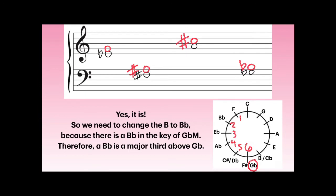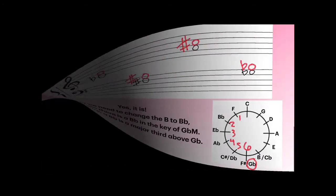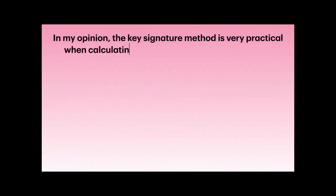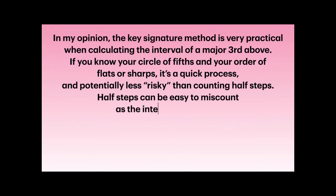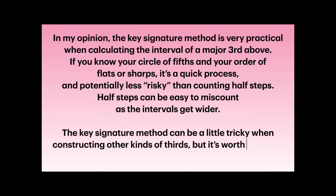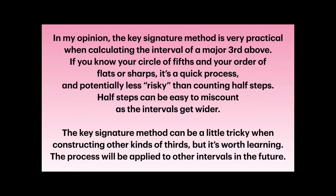We can use this method for constructing any major third above — plug in the key signature of whatever your lower pitch is. If you apply that key signature to the higher pitch, you'll have a major quality interval. In my opinion, the key signature method is a very practical way of calculating the interval of a major third above. If you know your circle of fifths and your order of flats or sharps, it's a quick process and potentially less risky than counting half-steps. The key signature method can be a little tricky when constructing other kinds of thirds, but it's worth learning — this process will be applied to other intervals we construct in the future.